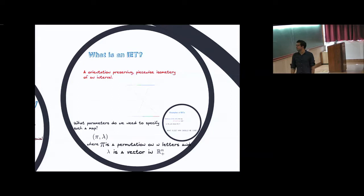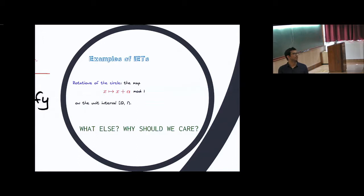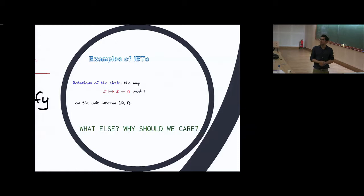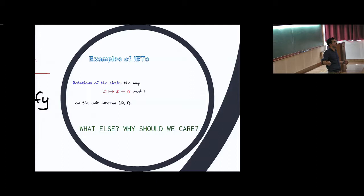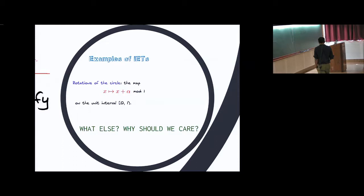The parameters we need for such a map are a permutation pi on n letters and lambda as a vector in the positive cone in R^n. One nice geometric connection is that if I take an interval exchange of two intervals, it's actually just a rotation of the circle. If you exchange two intervals, and your whole interval has length one, then the interval exchange map of two intervals is simply a rotation of the circle — it's exactly just x goes to x plus alpha mod one.